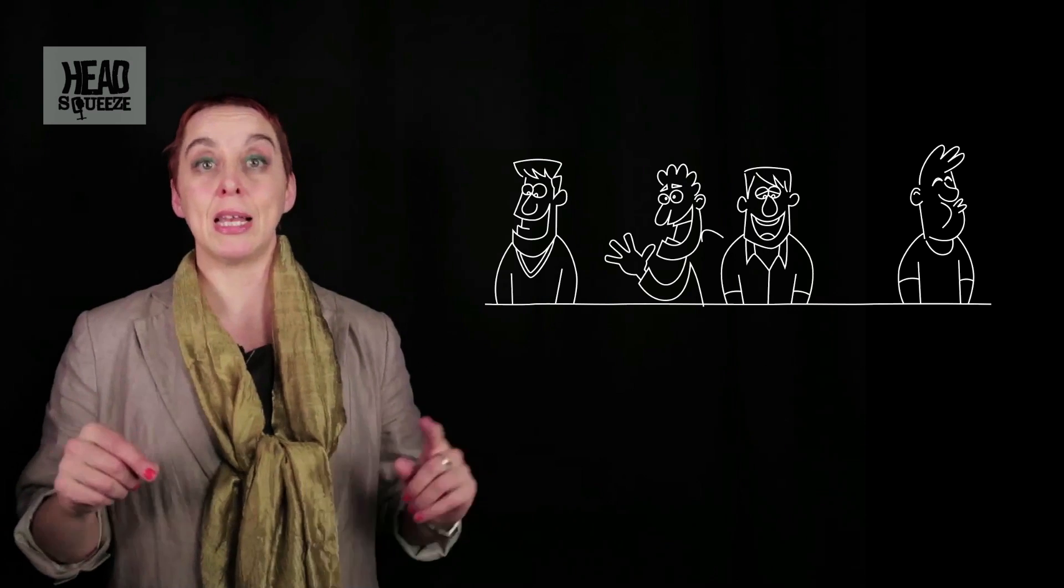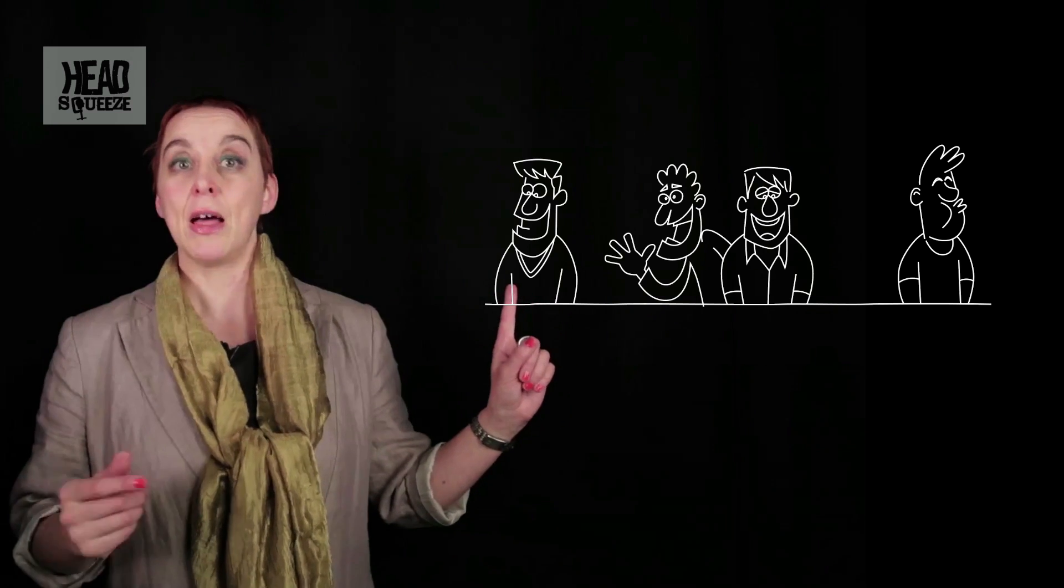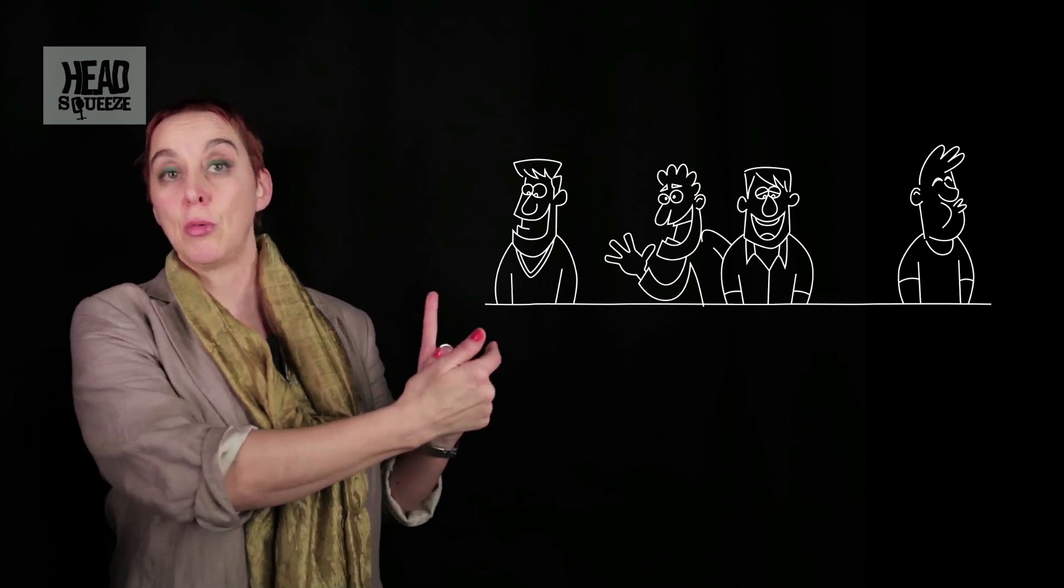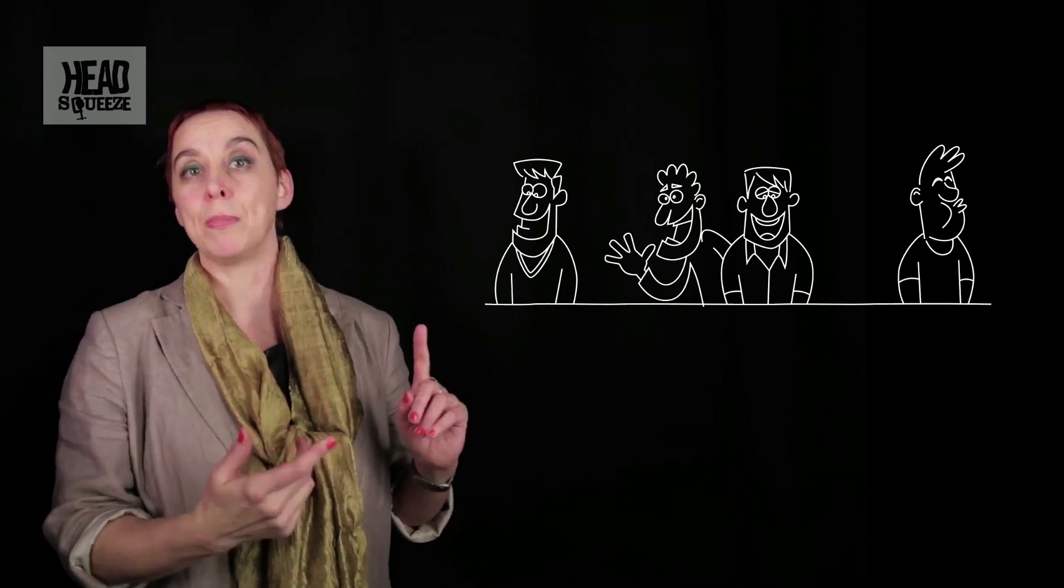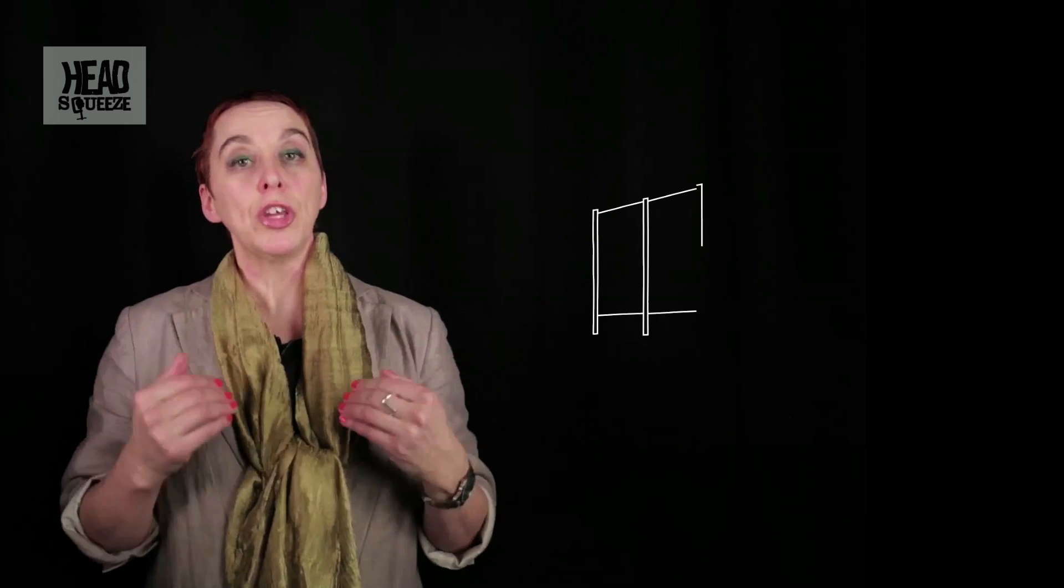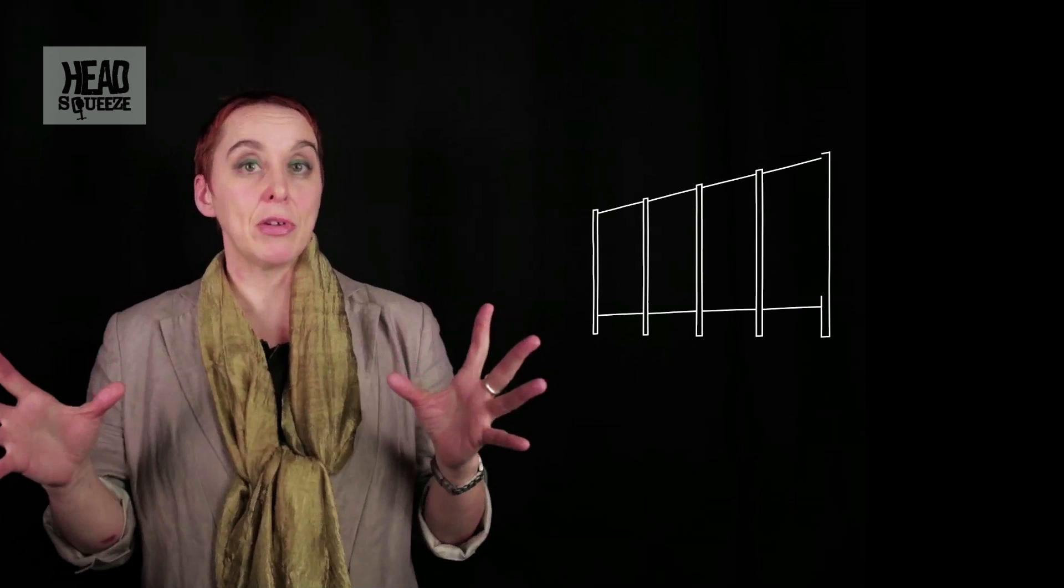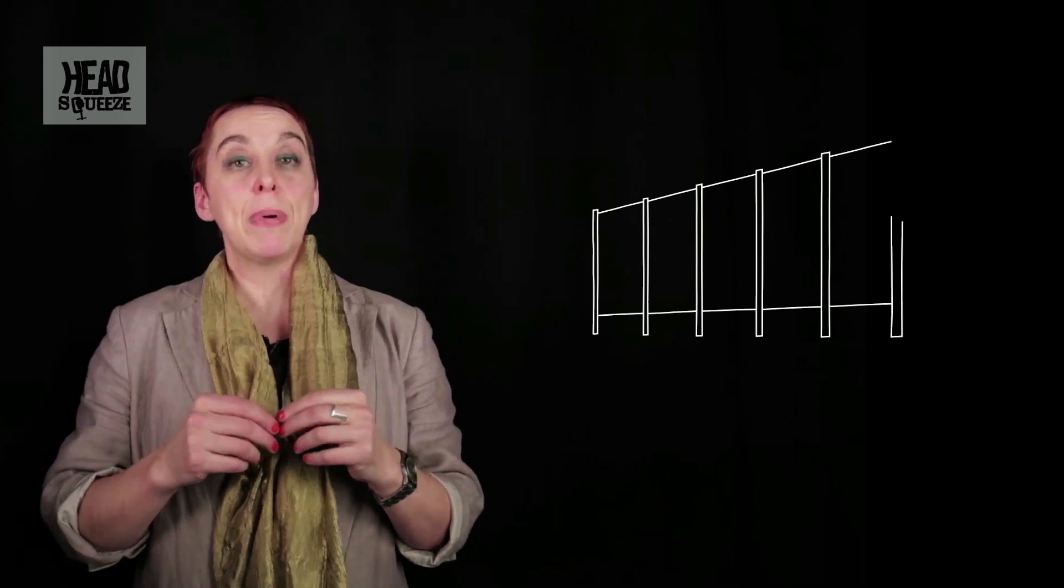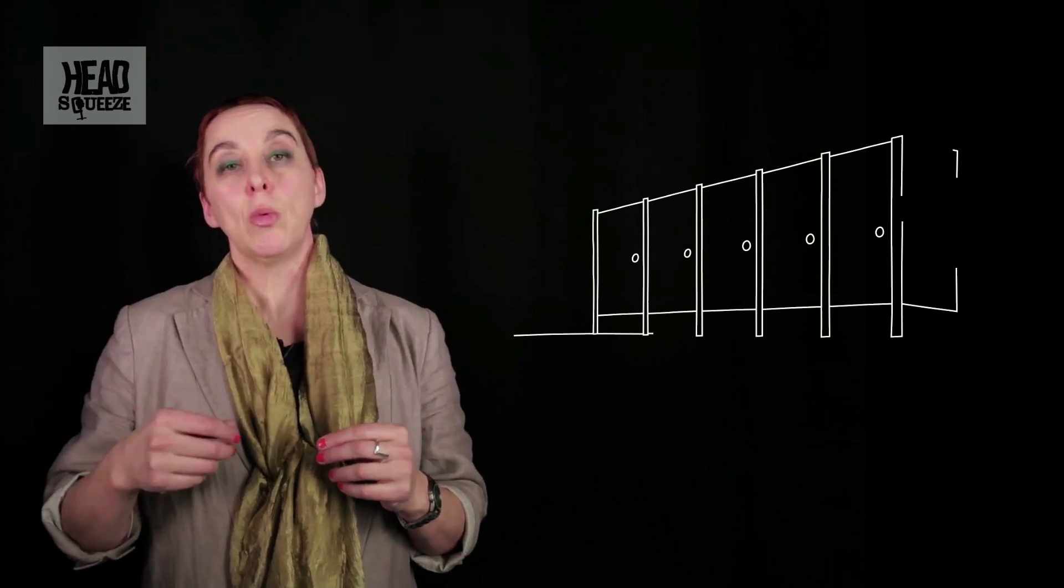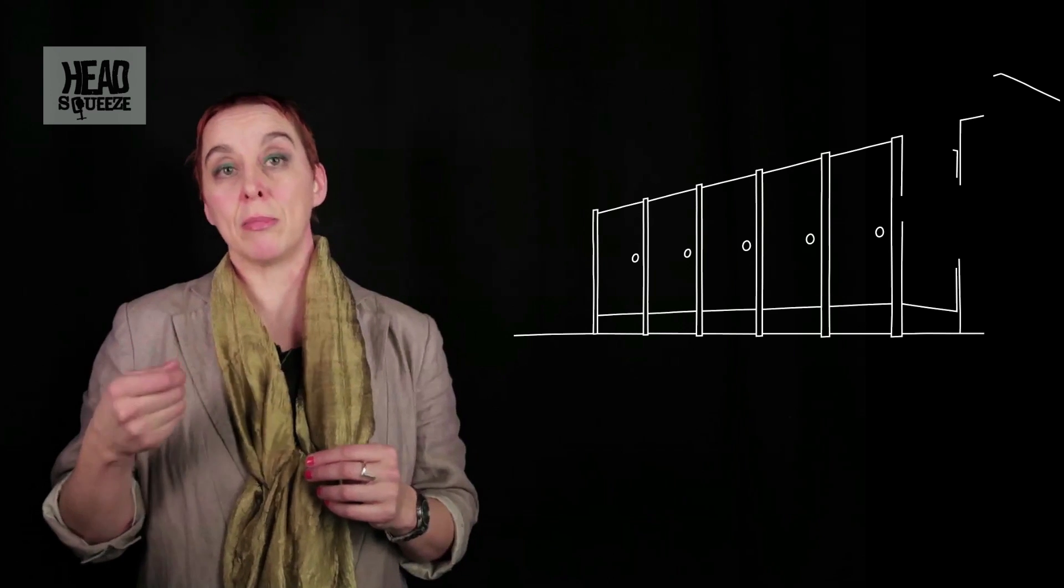But when the fourth person comes in, if you're in the middle in space number three, they will have to stand next to you because the only empty spaces are two and four. So this shows us not only that what you want for yourself privately may not be the same as maximizing for everybody, but also that it depends on what other people are going to do. We have fed a lot of assumptions into our mathematical model.